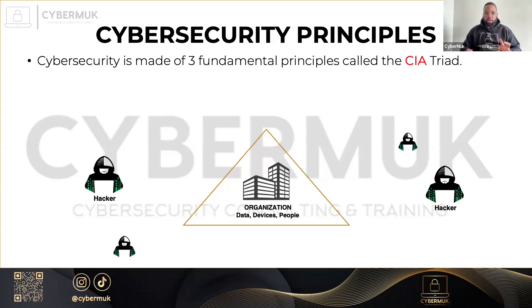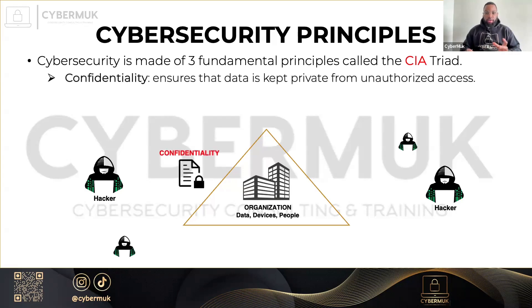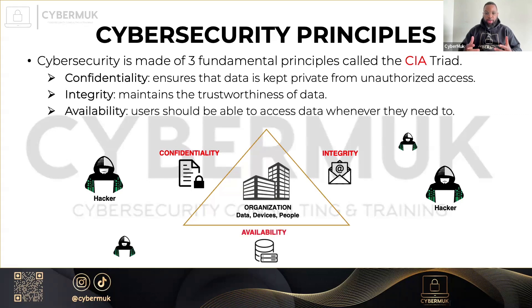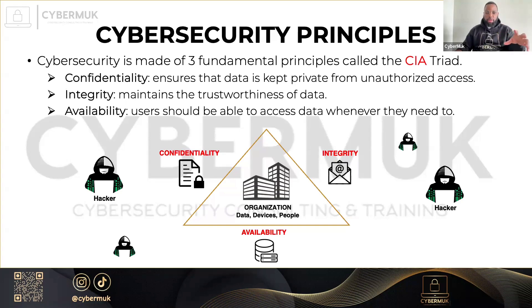What is the CIA Triad? It's an acronym for Confidentiality, Integrity, and Availability. Confidentiality ensures that data is kept private from unauthorized access. Integrity maintains the trustworthiness of data. Availability means users should be able to access data when they need to. It guides an organization's efforts to ensure data security.